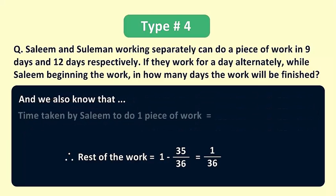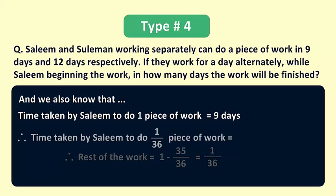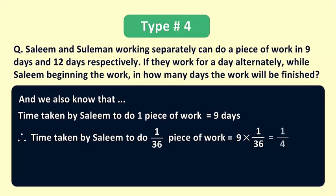And we also know that time taken by Salim to do 1 piece of work is equal to 9 days as it's given in the question. Therefore time taken by Salim to do 1/36 piece of work, which is also the remaining piece of work, is equal to 9 × 1/36 which will give us 1/4 days.